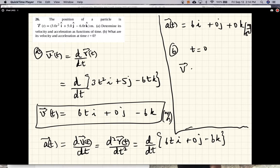Velocity at 0 seconds would be 6 times 0, which would be 0, and so it would be 0i plus 0j minus 6k meters per second.